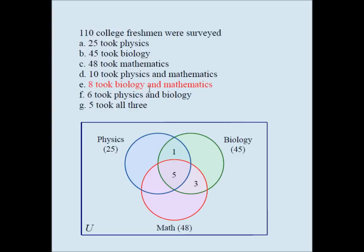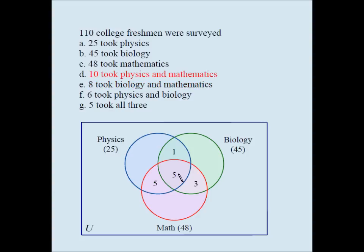Eight took biology and mathematics — the entire football overlap is worth eight, so this has to be three because the center is already five. Three people took only math and biology. If the question said 'only,' you would put eight here; since it doesn't say 'only,' eight is for the entire football. Again, ten took physics and math, so this football should be ten; since the center is five, this has to be five.